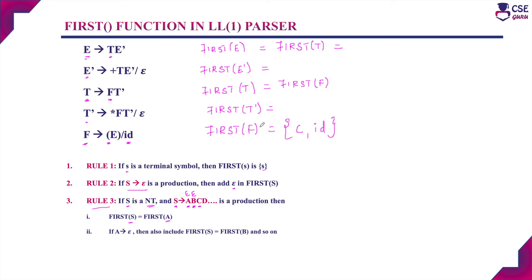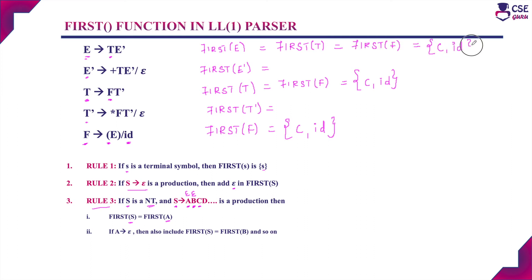Now we can substitute back. FIRST(T) = FIRST(F) = { (, id }. And FIRST(E) = FIRST(T) = FIRST(F) = { (, id }, the set of terminal symbols open bracket and id.